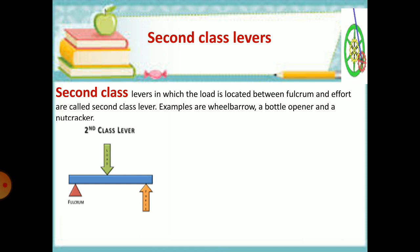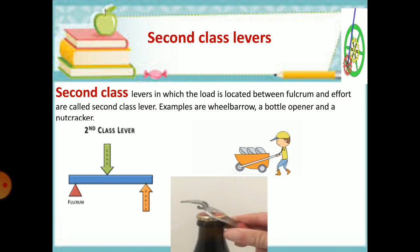Second class levers in which the load is located between fulcrum and effort are called second class lever. Examples are wheelbarrow, a bottle opener, and a nutcracker.